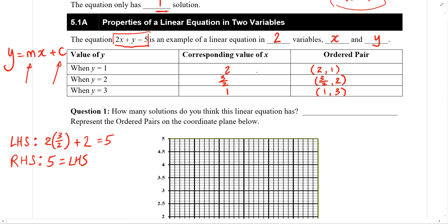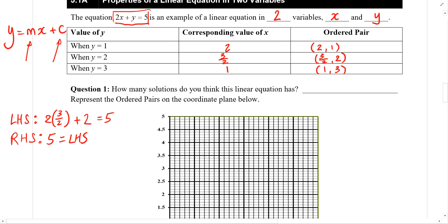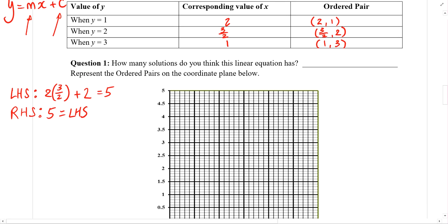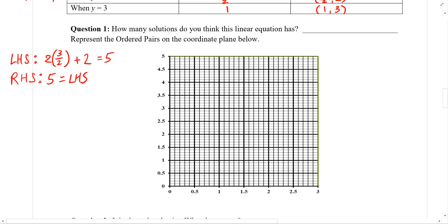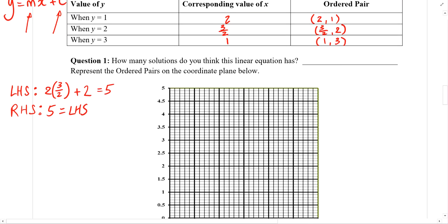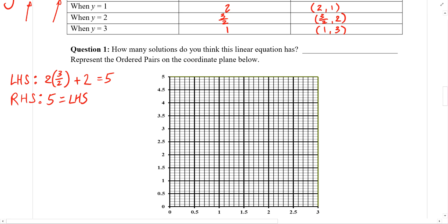So likewise, we can carry on multiple times. We can try any value of x we like, we will get a corresponding value of y. We can get any value of y we like, we can find a corresponding value of x. So let us try to represent the ordered pairs on the coordinate plane below. So this is our coordinate plane. The number on the left of the ordered pair will be our x coordinate, number on the right is the y coordinate.